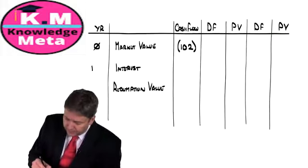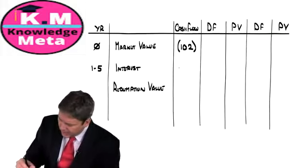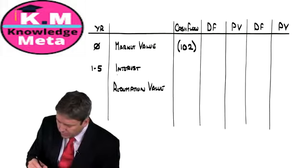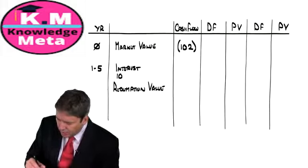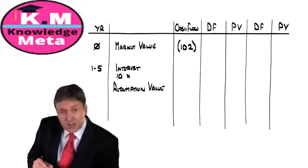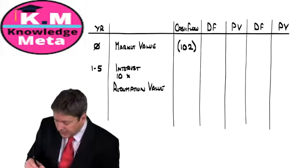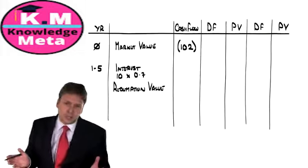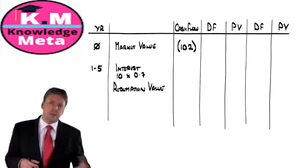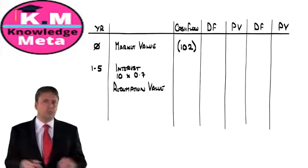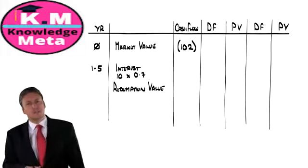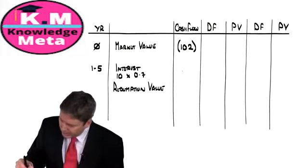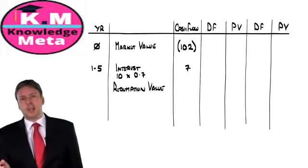It doesn't matter which way around we do it to get the IRR. The interest runs for five years. The interest is 10% of $100, so 100 multiplied by 10% gives us 10, and then we multiply by (1 − T). If the tax rate is 30%, then we're paying the other 70%, so our interest is 7 each and every year.